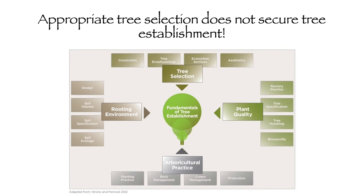Finally, tree selection is only one aspect of really securing tree establishment. Plant quality is really, really important; the rooting environment is essential; and the fundamental arboricultural practice of planting and providing aftercare is also really important. Thanks for your time — it's been a quick presentation and I hope you got something from it. I look forward to and welcome your questions shortly.